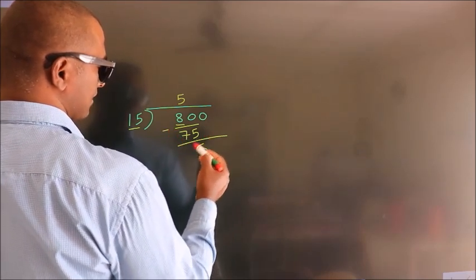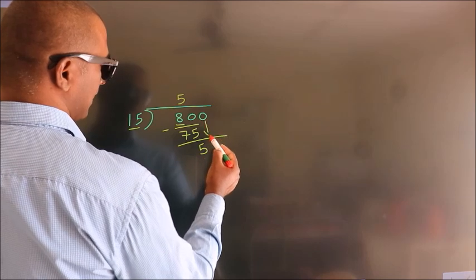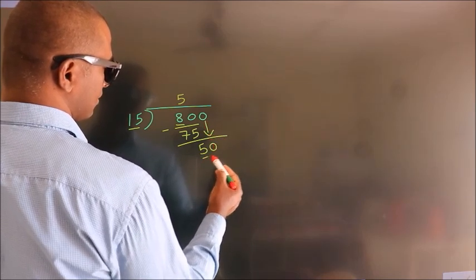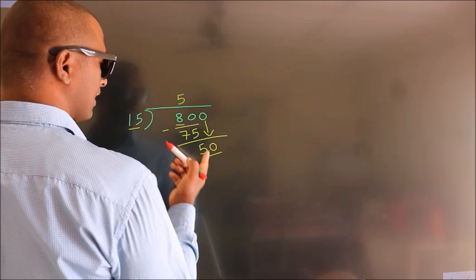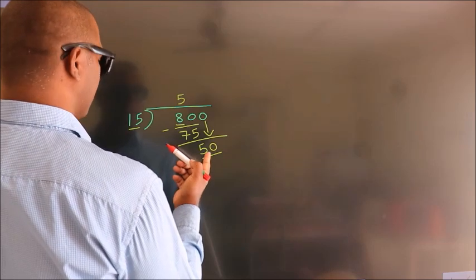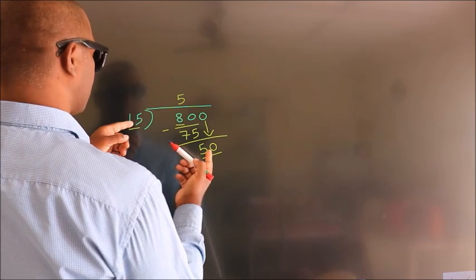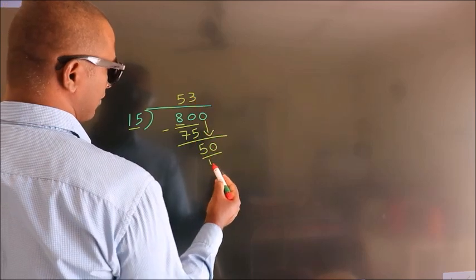After this, bring down the beside number. So 0 down, so 50. A number close to 50 in 15 table is 15 threes, 45.